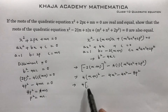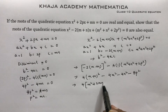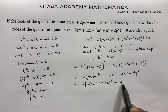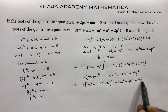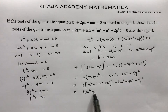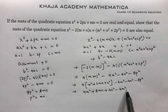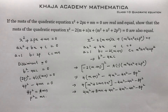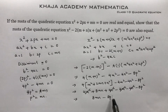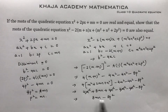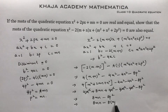Expanding (m+n)² = m² + 2mn + n², so we get 4m² + 8mn + 4n² - 4m² - 4n² - 8p². The 4m² and 4n² terms cancel, leaving 8mn - 8p². Since p² = mn, this becomes 8mn - 8mn = 0.